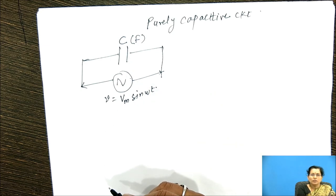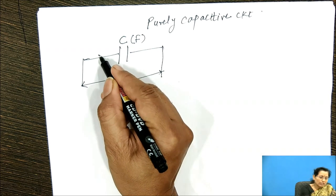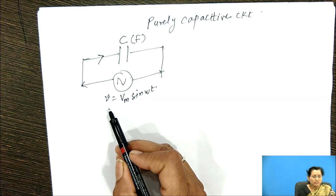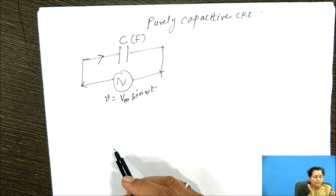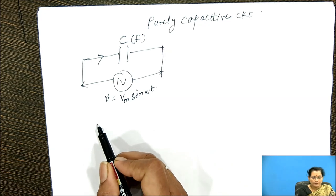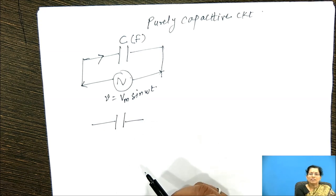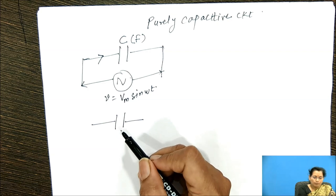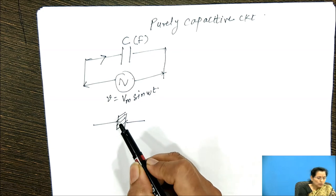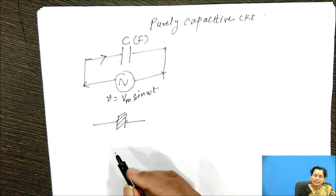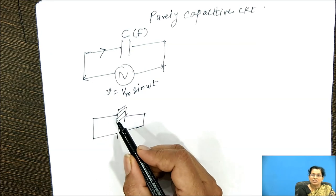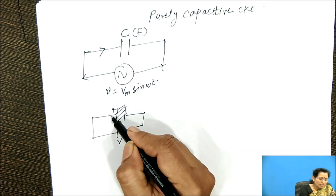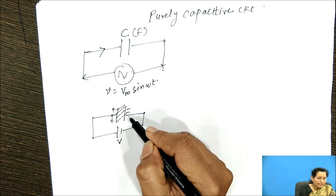In this session, we are going to discuss about the current relation with this voltage — how this capacitor works when we connect this AC voltage. A capacitor is nothing but two conducting plates connected together with a dielectric material provided in between. If we connect DC voltage here, the capacitor charges to this voltage V. Due to the positive terminal of the battery, positive charges accumulate on one plate and negative charges accumulate on the other.